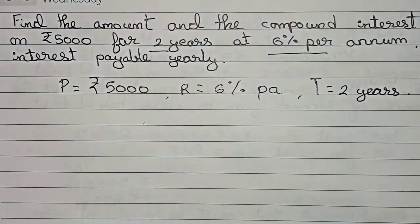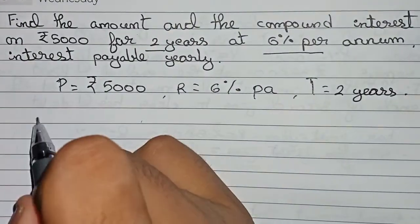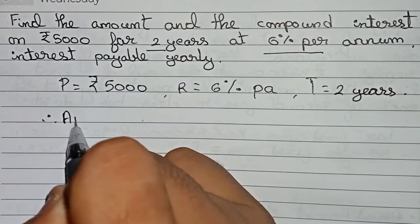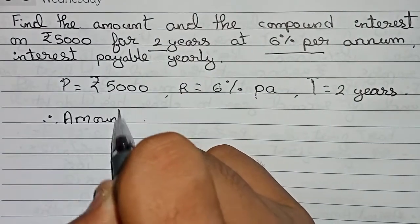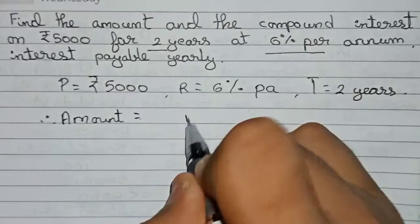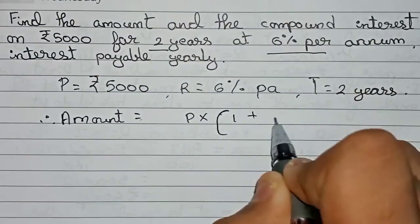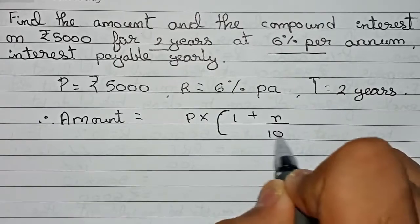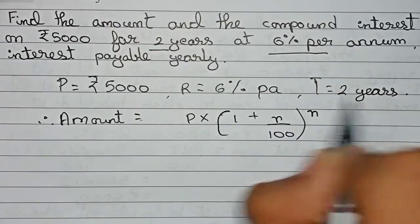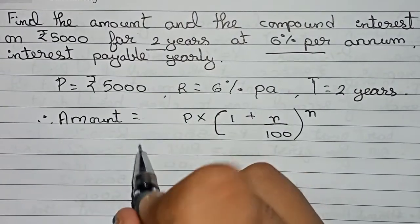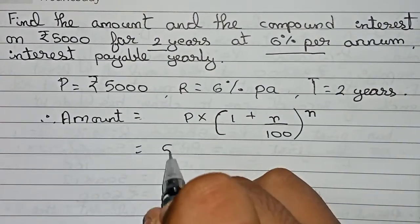Now we will write our formula like this: therefore the amount equals the formula is principal times bracket one plus R by 100, or the rate by 100, to the power n, where n is the number of years.